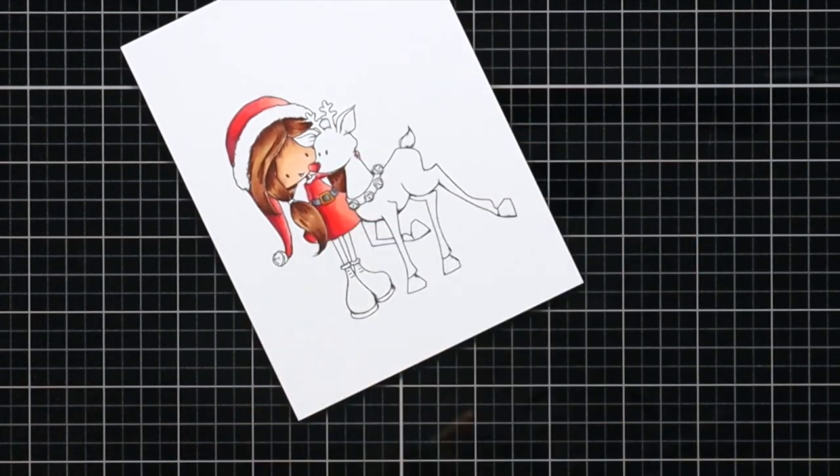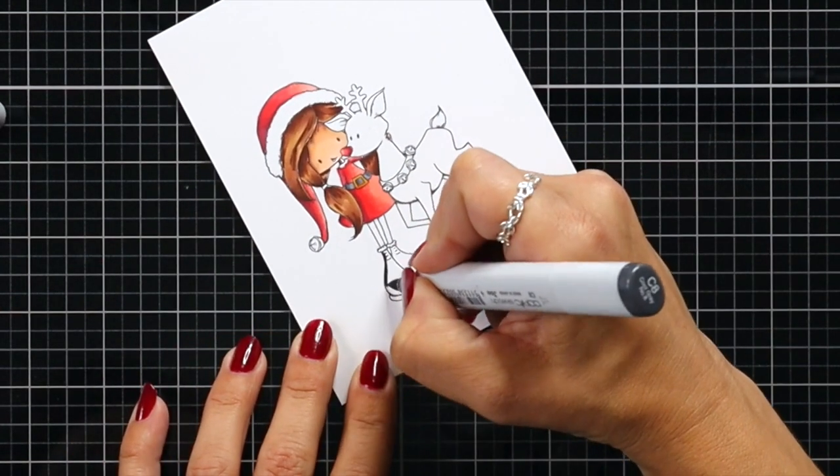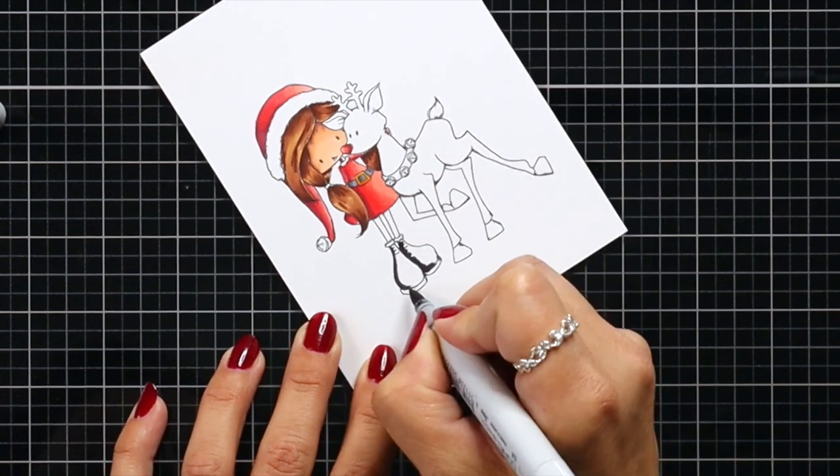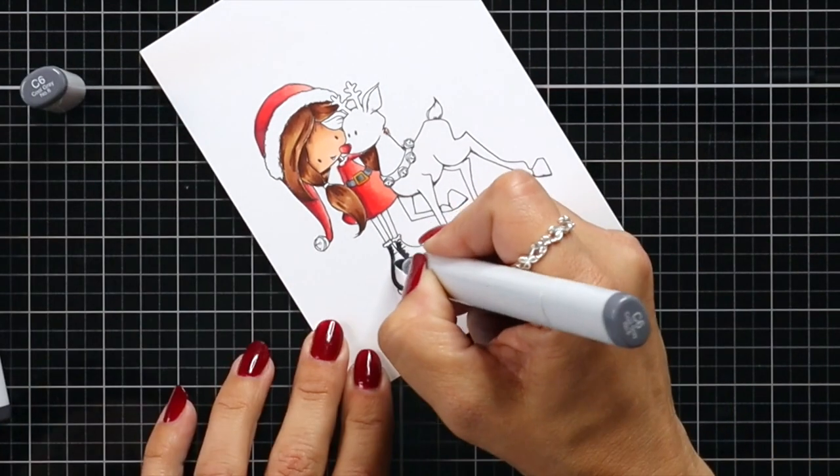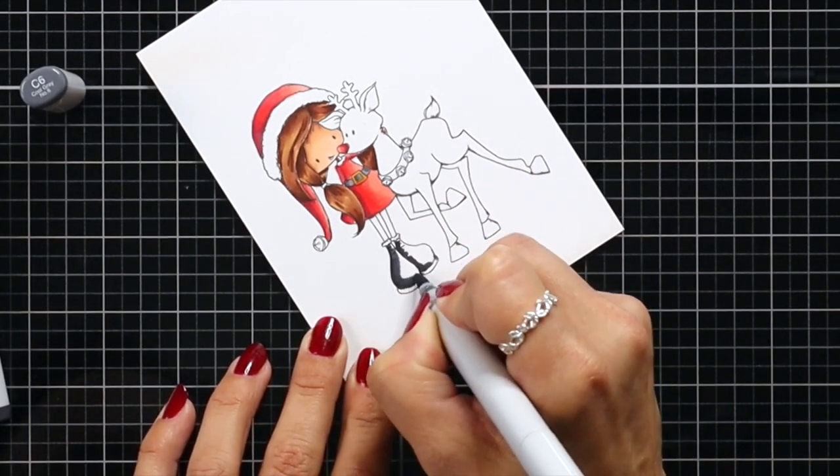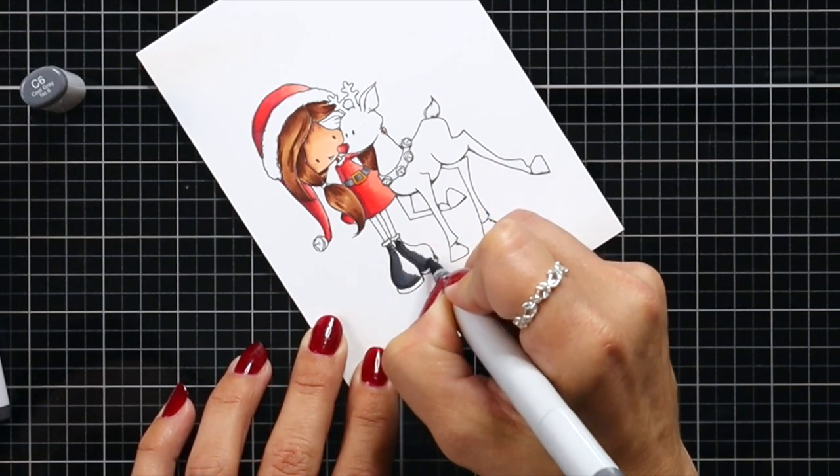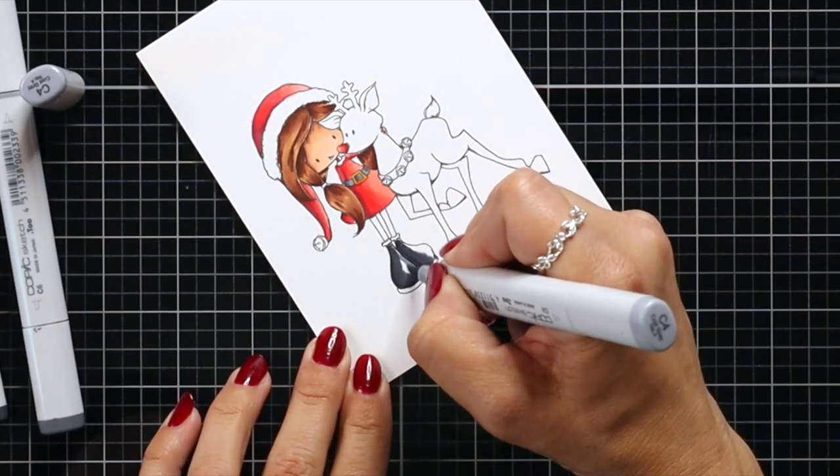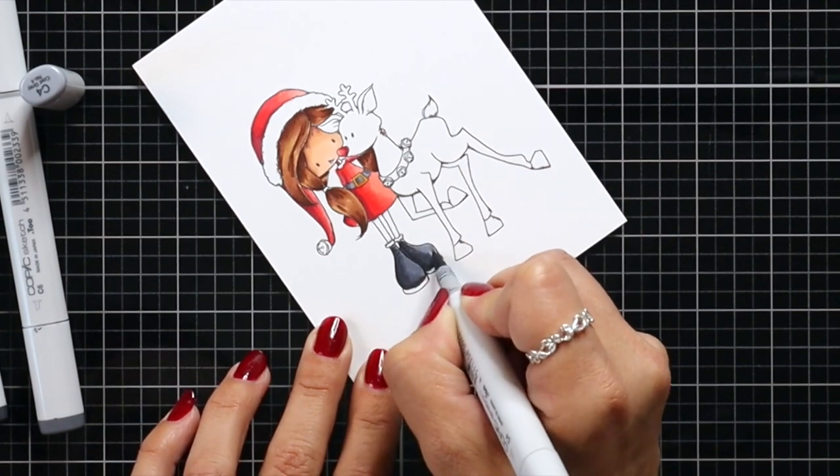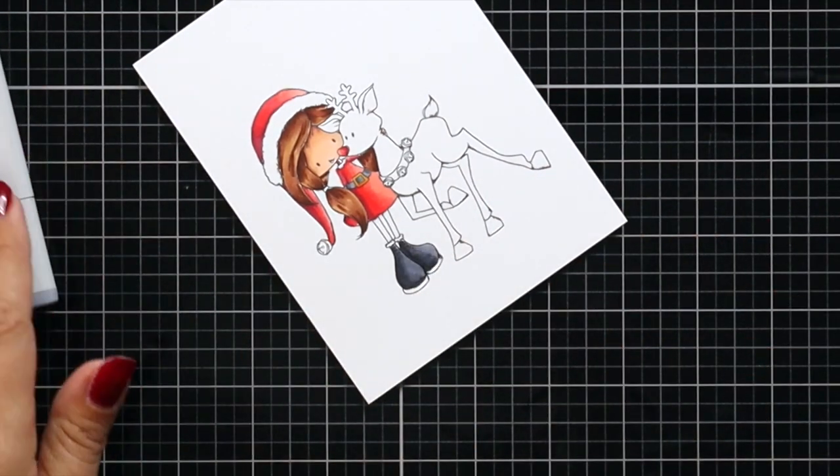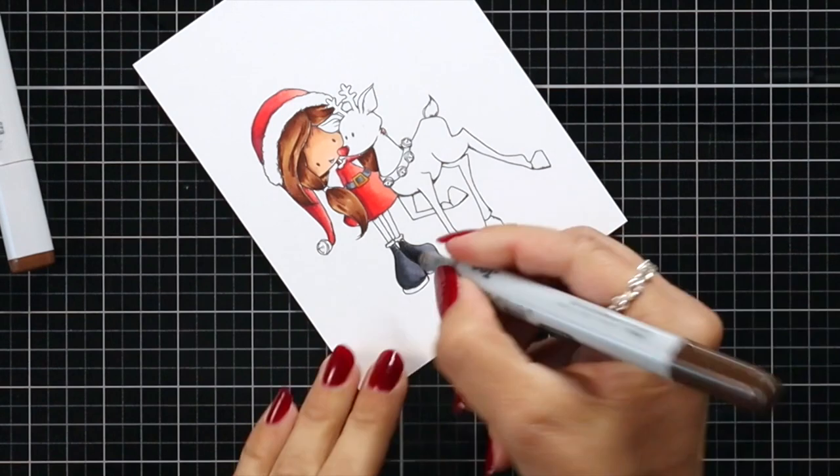For the belt I used C6 and C4. I did YR23 for the belt buckle, and then for the boots I used C8, C6, and C4. For the bottom of the boot or the sole, I used E29 and 25.